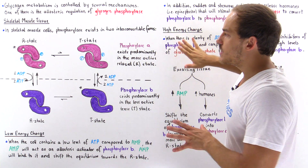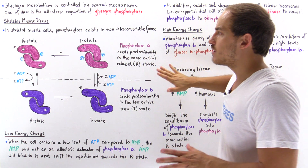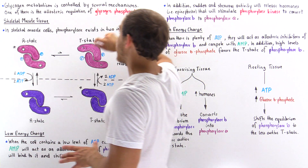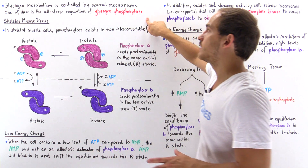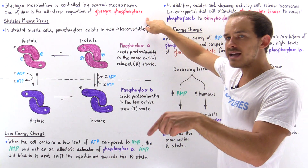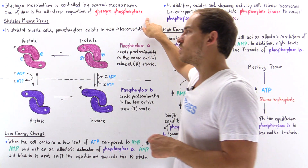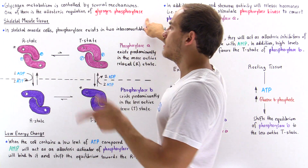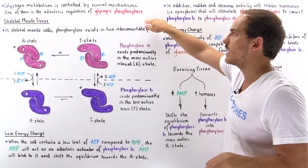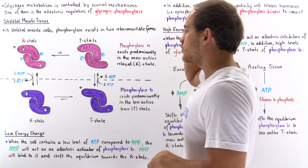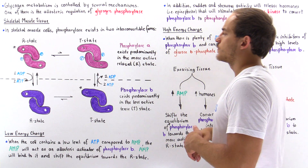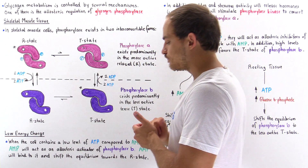In this lecture, I'd like to focus on how skeletal muscle cells actually regulate glycogen phosphorylase. In the next lecture, we're going to focus on liver cells and discuss how they regulate glycogen breakdown via the regulation of glycogen phosphorylase.